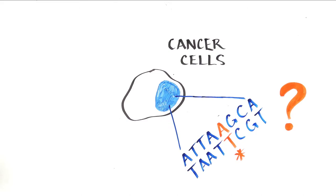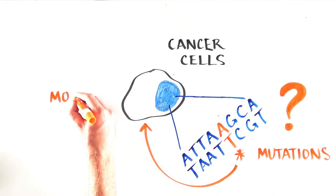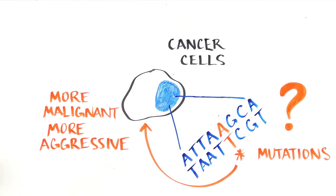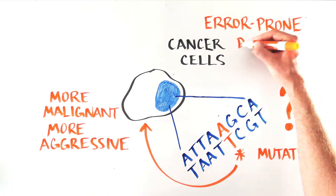Well, when DNA is improperly repaired, errors are introduced in the DNA sequence, and this provides the opportunity for mutations to occur, or changes in the DNA sequence. Mutations in cancer cells can create more malignant or aggressive cancer cells. We call this type of DNA repair error-prone repair.